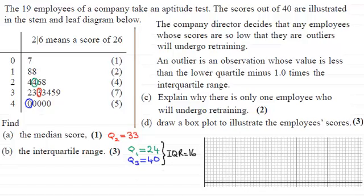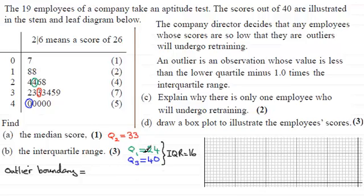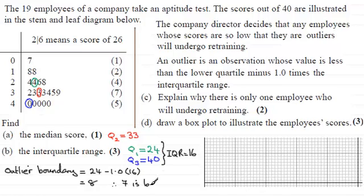Welcome back. First of all, we've got to work out what the outlier boundary would be. Let's put down the outlier boundary — a lower boundary point — because we're looking at the lower quartile minus 1 times the interquartile range. The lower quartile Q1 was 24, and we do minus 1.0 times the interquartile range, which was 16. Working this out gives us 8. The only value below 8 is the 7, so therefore we have one value — 7 — that is below the outlier boundary. That answers part C.